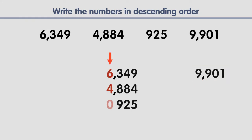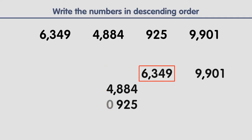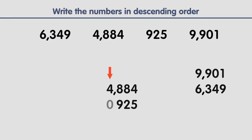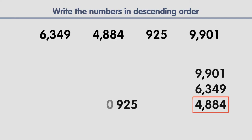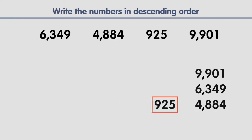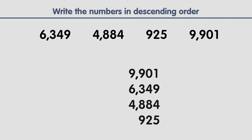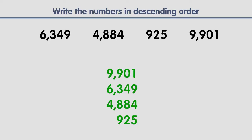We do the same with the remaining numbers. The largest digit in the first column is six, so this is the next number in order. Between four and zero, four is larger, so this is the next number in order. The last number left is the smallest number. And this is how we order numbers in descending order, from largest to smallest.